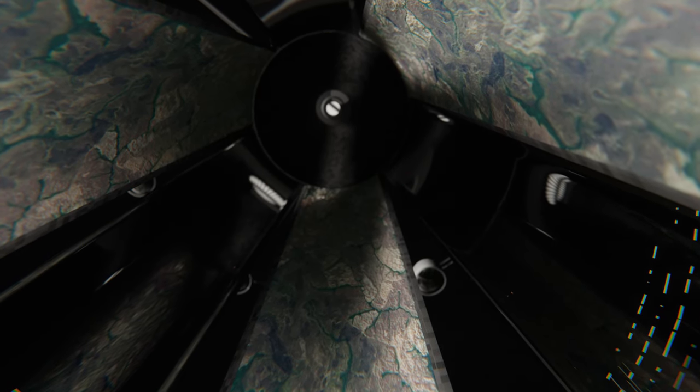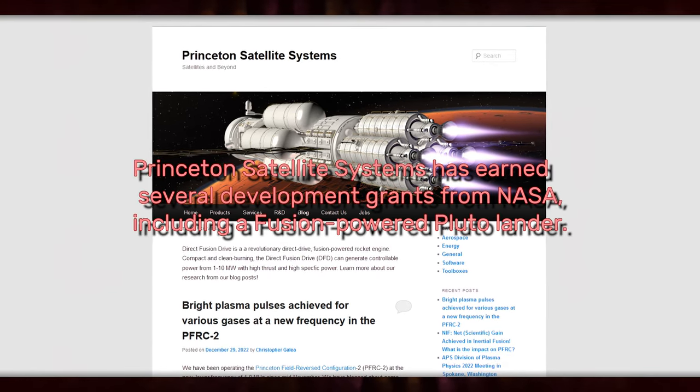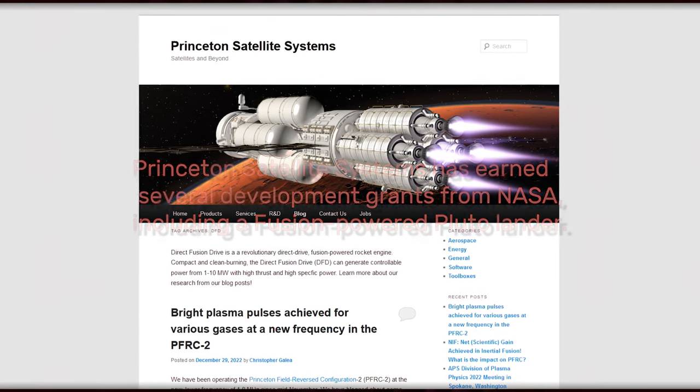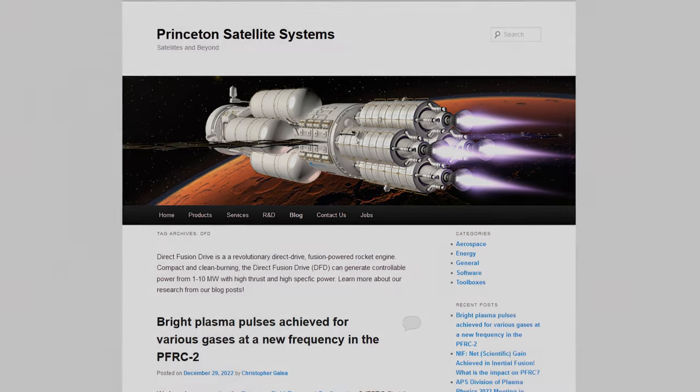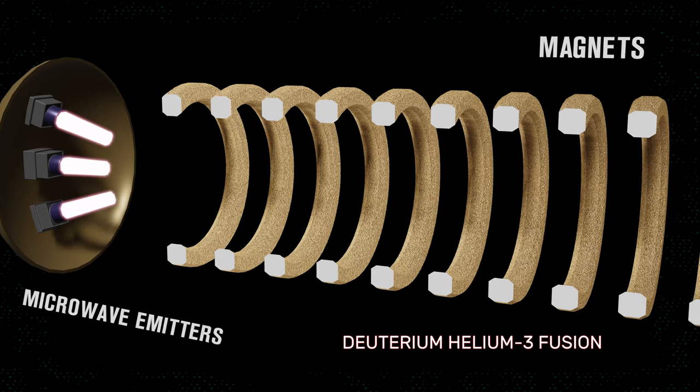Princeton Satellite Systems is a startup drawing from the satellite industry's talent, with over 20 years of experience. They're developing miniature fusion engines for deployment on current space vehicle architectures.